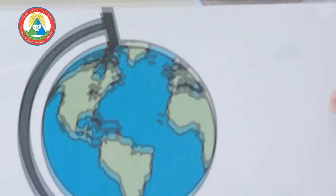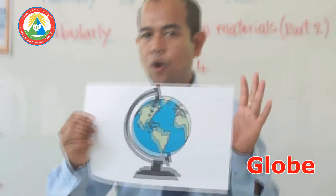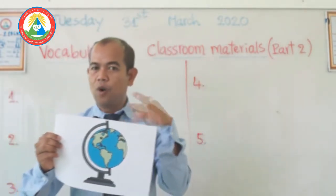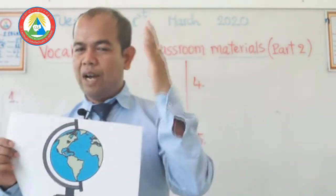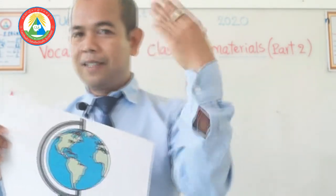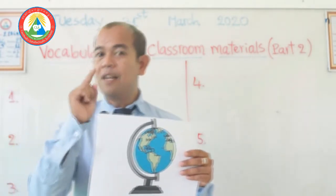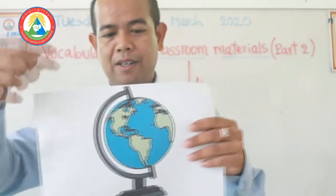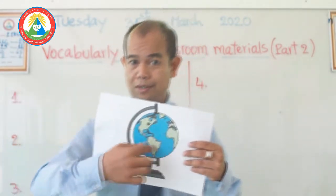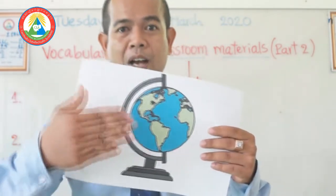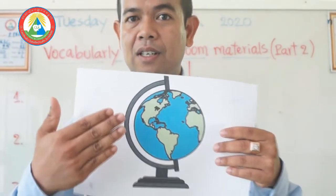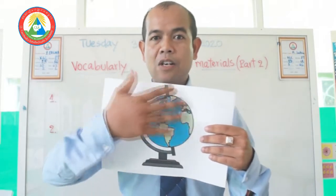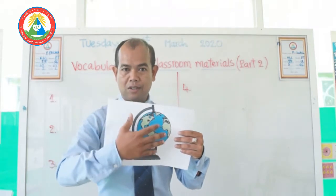It's a globe. Globe. Just listen to me very carefully — globe. What is the definition of globe? I am pretty sure you understand in Khmer, but now you are studying English. The globe is a map of the world made in the shape of a ball, attached to a support, and can be turned around at the same angle as the Earth turns.